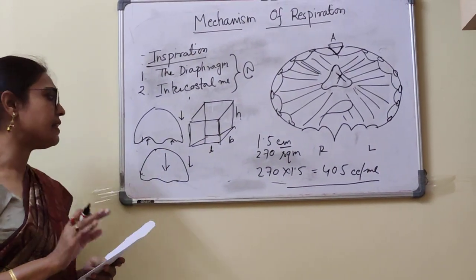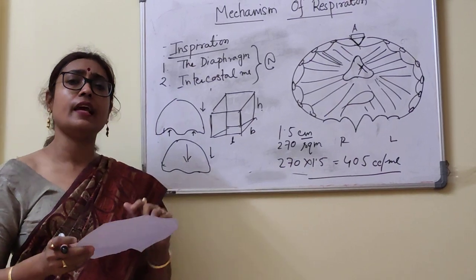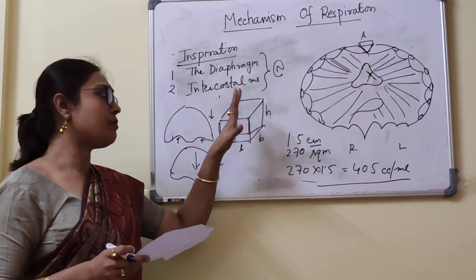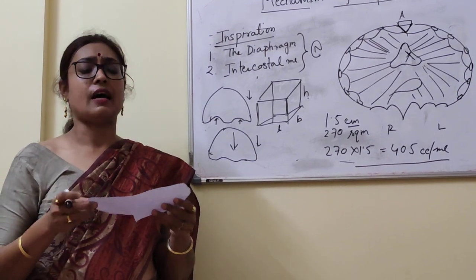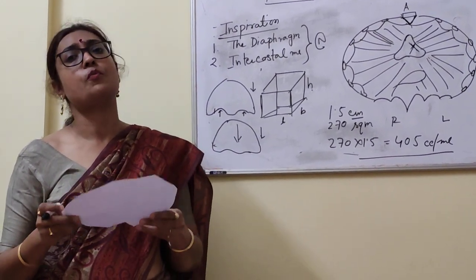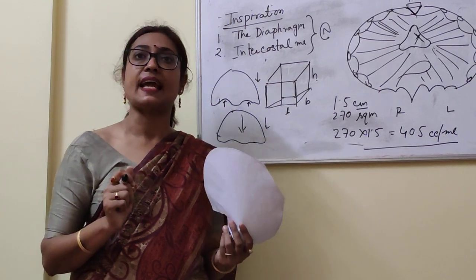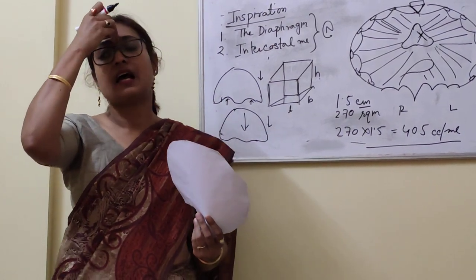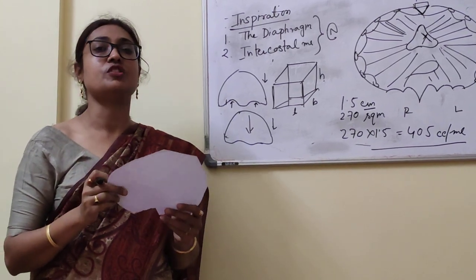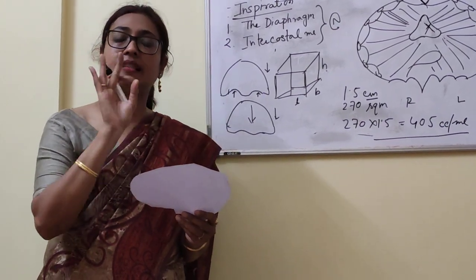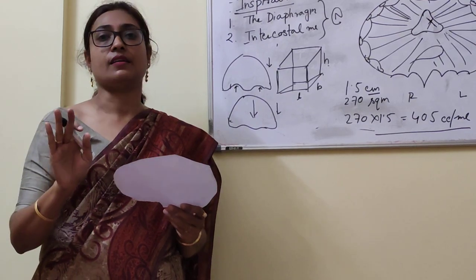The function of the diaphragm also depends on posture — that means when a person is standing, lying down, or sitting, the diaphragm is not acting similarly as an inspiratory muscle. When a person is lying down, the height of the diaphragm in the thoracic cavity is highest. More the height of the diaphragm, more will be the excursion by the diaphragm, and the best action of the diaphragm is obtained.